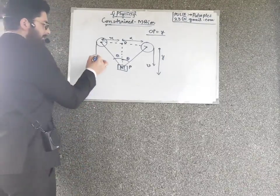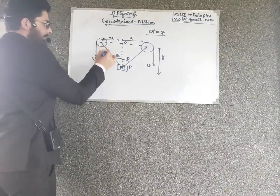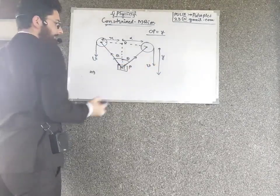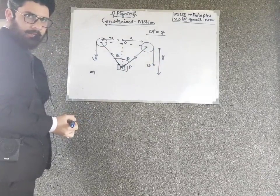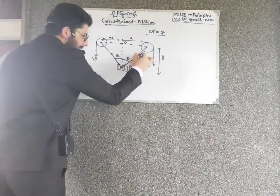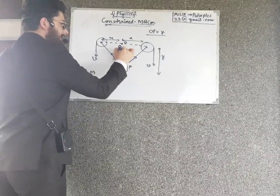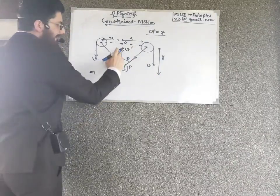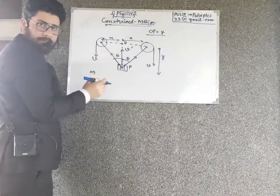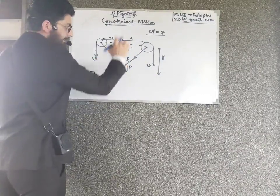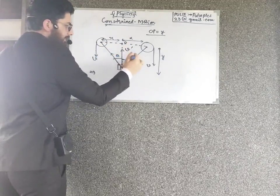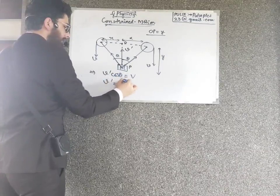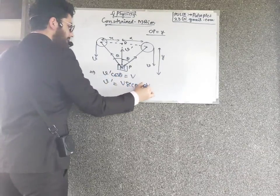This point has velocity V along the string. The block has velocity V-dash going up. The component of V-dash along the string equals V. So V-dash cos θ equals V, which gives V-dash equals V divided by cos θ, which equals V sec θ. That is the answer: V' equals V sec theta.